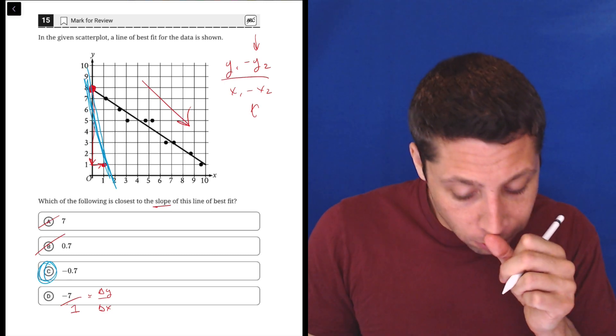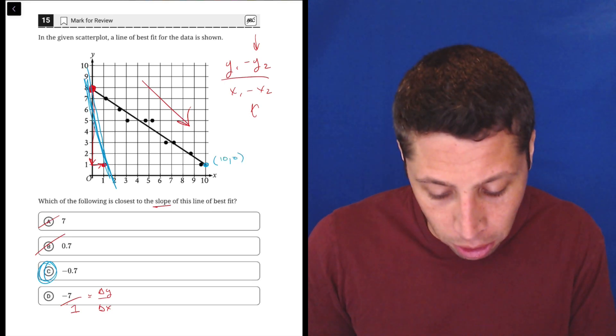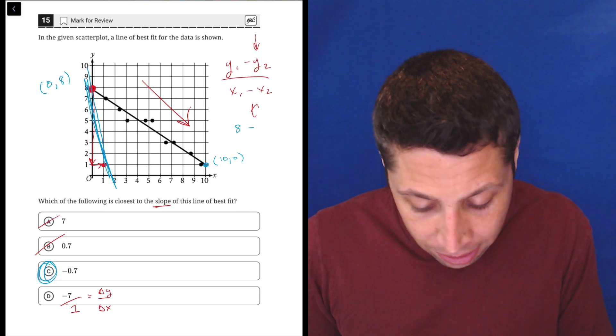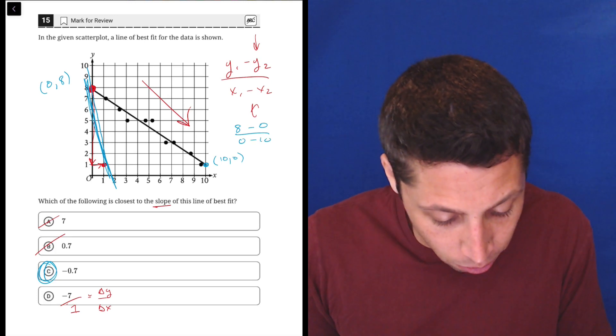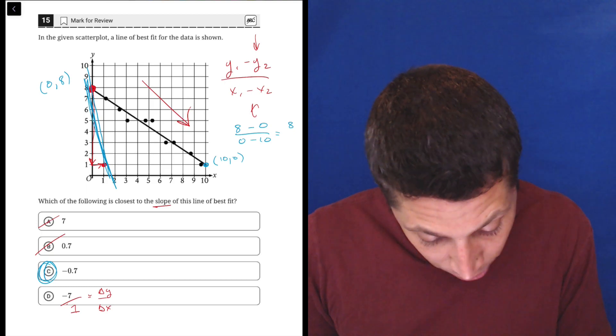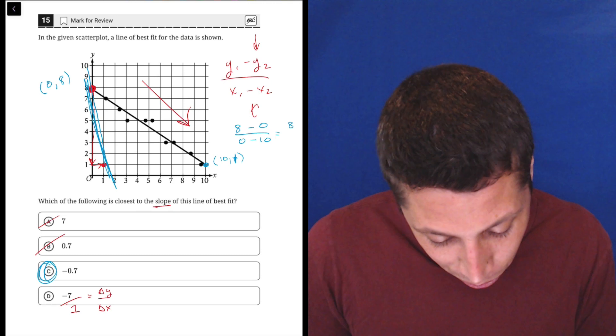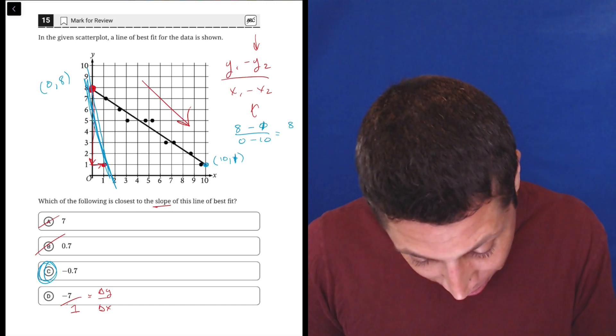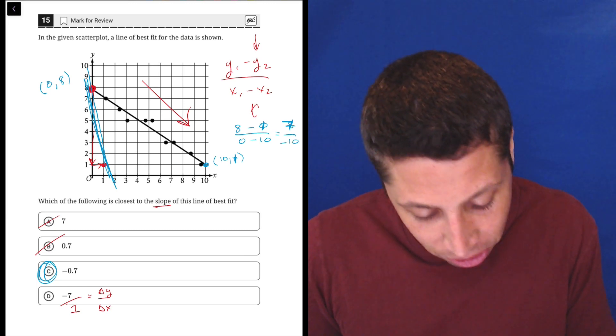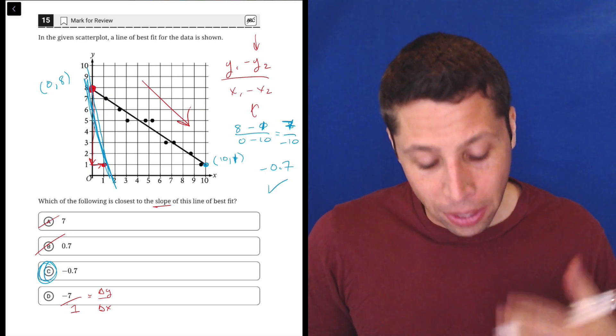If we wanted to do it very quickly, we could also focus on the fact that this point here 10, 1 is kind of a nice point. So we could plug in: change in Y over change in X. This was 0, 8, so 8 minus 1 which is 7 over 0 minus 10 which is negative 10. If we put that in the calculator, negative 0.7, so it works out nicely.